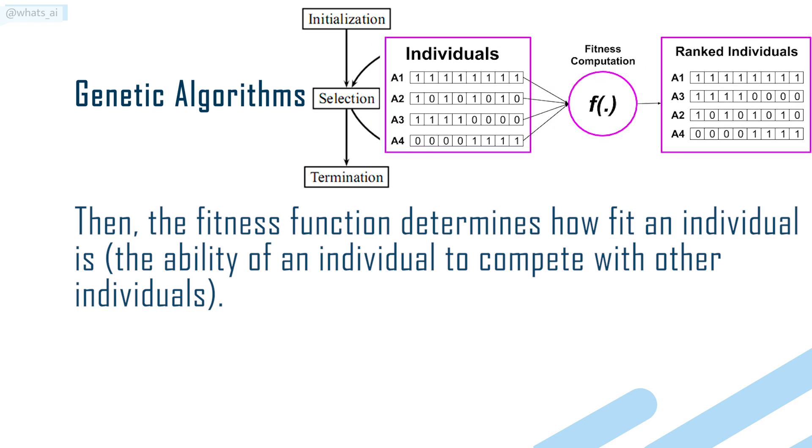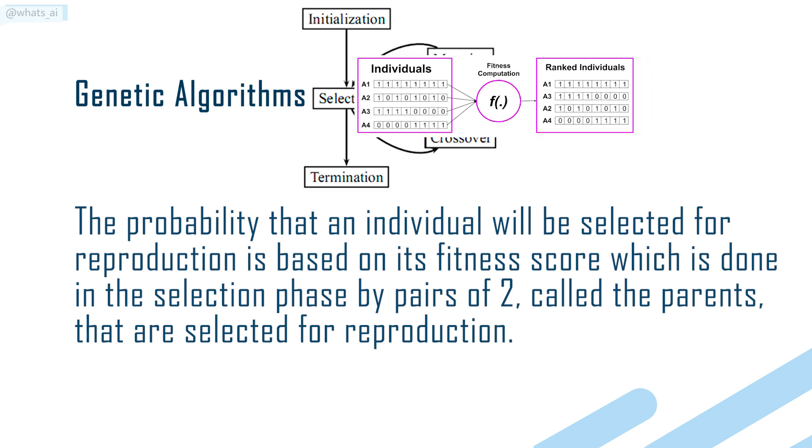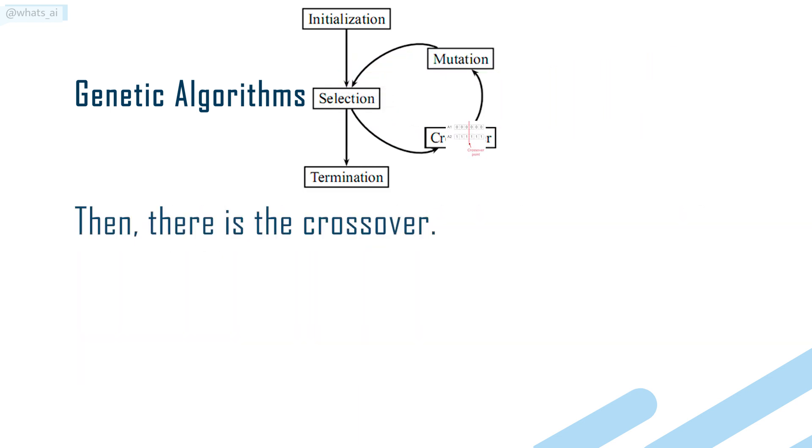The fitness function gives a fitness score to each individual. The probability that an individual will be selected for reproduction is based on its fitness score, which is done in the selection phase by pairs of two called the parents that are selected for reproduction.